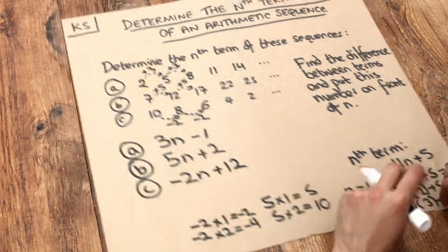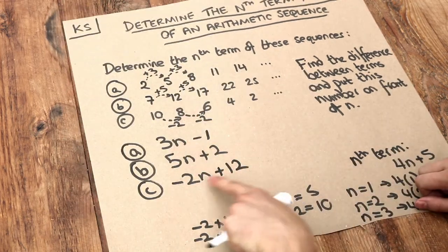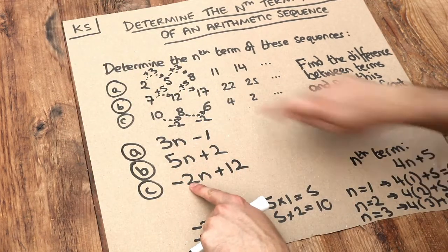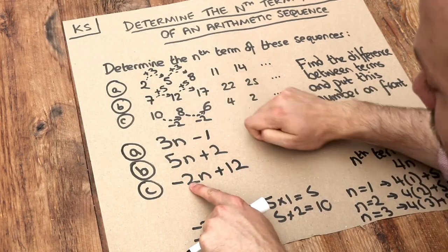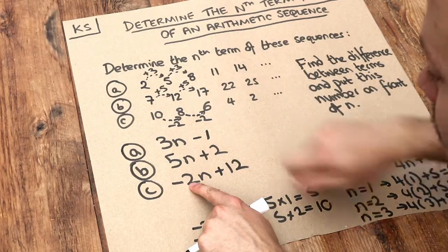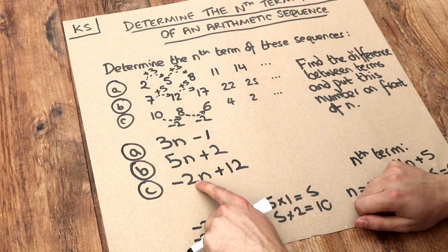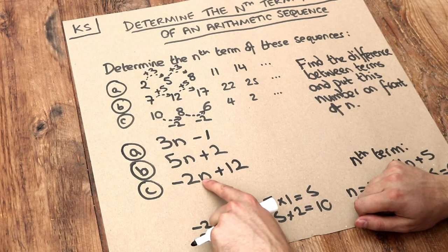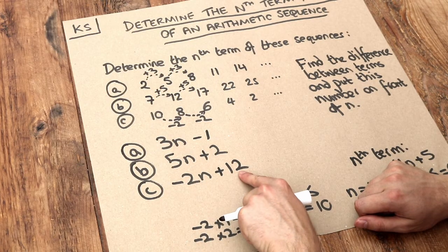Let's check that for the second term: minus 2 times 2 is minus 4, plus 12 is 8. That's correct.